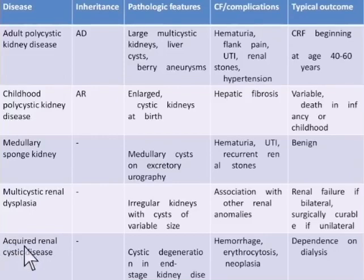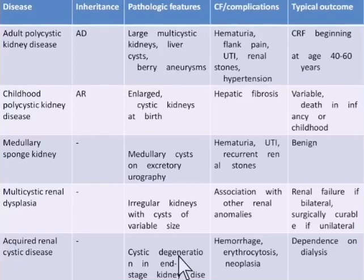Another cystic disease is acquired renal cystic disease — cystic degeneration in end-stage kidney disease. In end-stage renal disease, the patient on chronic dialysis will have atrophied tubules undergo cystic dilatation forming cysts. The complications include hemorrhage, erythrocytosis, and neoplasia. Patients on chronic dialysis have a 14 to 18-fold increased risk for developing renal cell carcinoma.